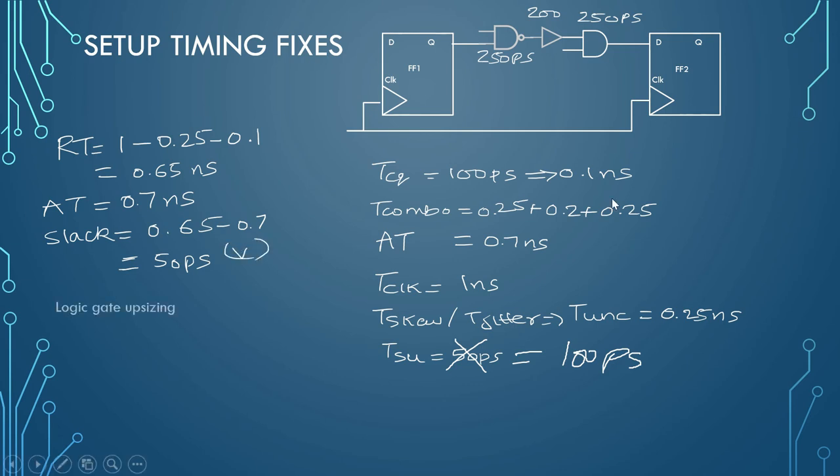To fix the violation of 50 PS, the target is to improve the logic path delay. We can do so by upsizing of logic gates. If your logic gate has poor drive strength or lesser drive strength, then by upsizing the logic gate we are essentially improving the cell delay, which in turn improves our arrival time and hence the slack will improve.